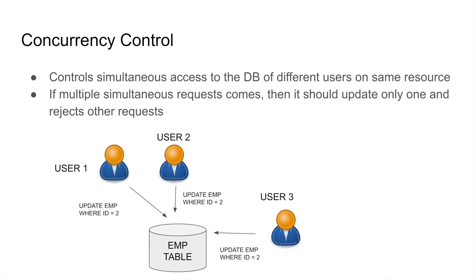To avoid this situation, we need to allow only one update request and reject the other requests. To control this, we have two different approaches in the RESTful ABAP programming model. Let's see what they are.